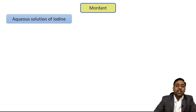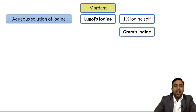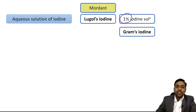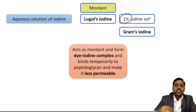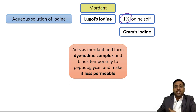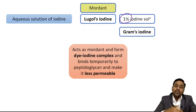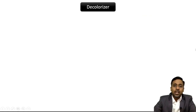The mordant used is an aqueous solution of iodine — specifically a one percent Lugol's iodine solution, which we call Gram's iodine. It acts as a mordant, meaning it helps in the binding of the dye (crystal violet) to the cell structure. It forms a crystal violet-iodine complex and also binds temporarily to the peptidoglycan layer, making it less permeable, thereby inhibiting leakage of the dye-iodine complex and enhancing gram-positivity.